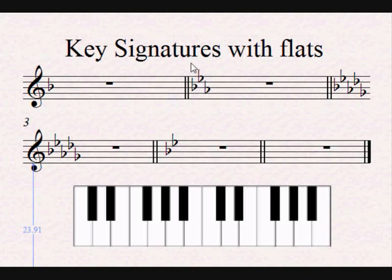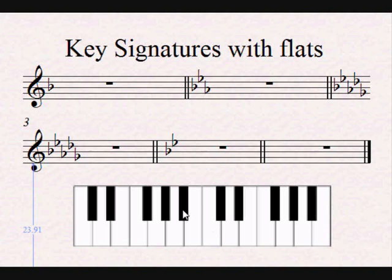For example, looking at this key signature, counting the flats: this is affecting the D flat — D flat major key signature — or its relative minor. The relative minor of D flat major — 1, 2, 3, 4 — is B flat minor. So this is written either in D flat major or B flat minor.